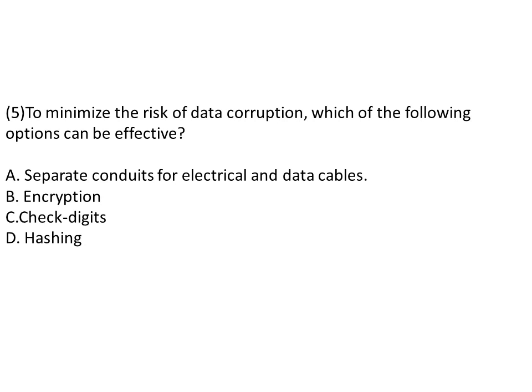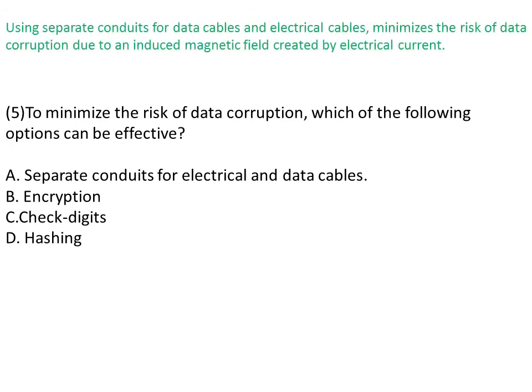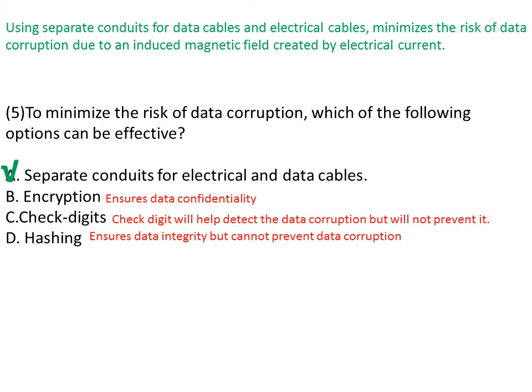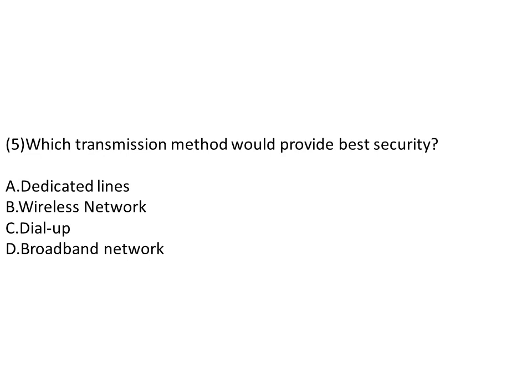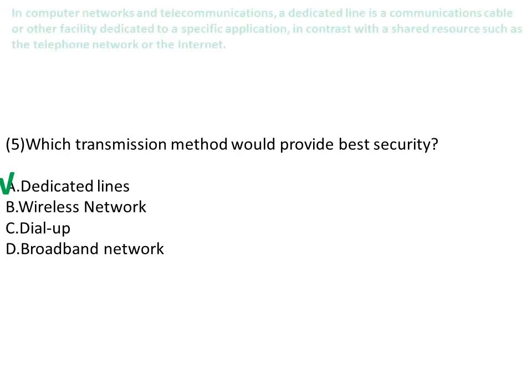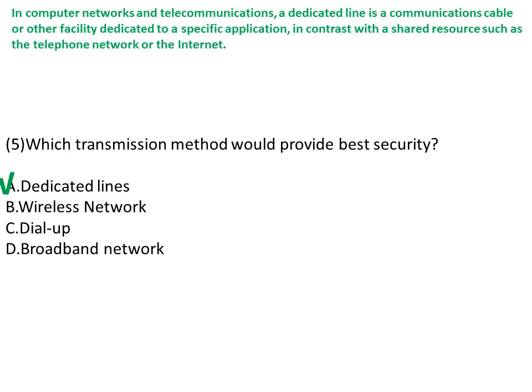To minimize the risk of data corruption, which option can be effective? The answer is separate conduits for electrical and data cables. Which transmission method would provide the best security? In contrast with shared resources, a dedicated line will be more suitable for security purposes.